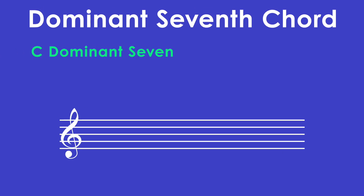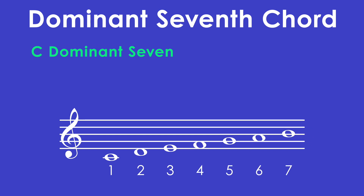The next type of seventh chord is called a dominant seventh chord. Let's build a C dominant seventh chord. C is our root. This also tells us what key signature to use — C major has no sharps or flats, so we're good. We can fill out our scale with numbered scale degrees. For a dominant seventh chord, we will use the same scale degrees as before — 1, 3, 5, 7 — but this time you will use a flat seven.